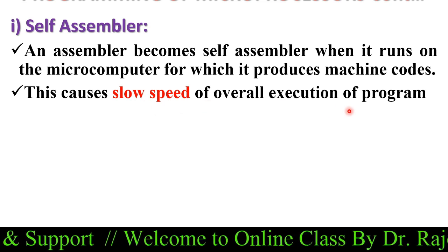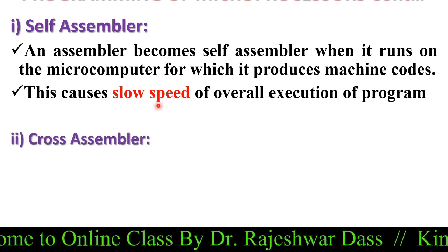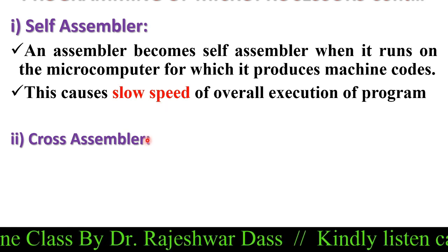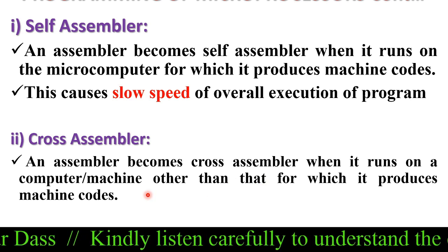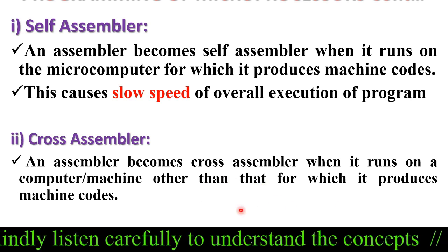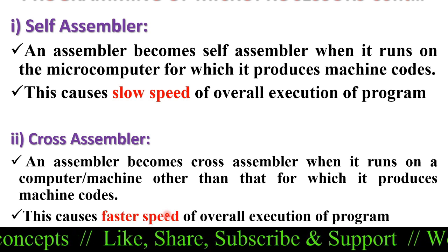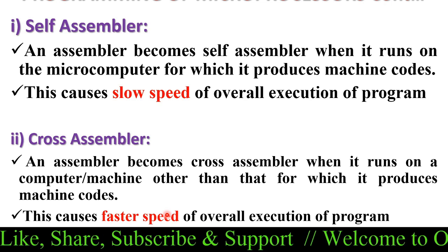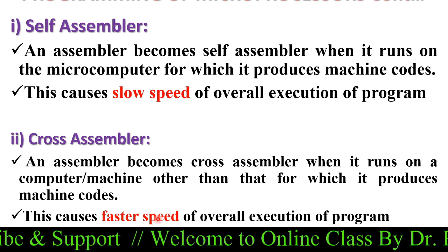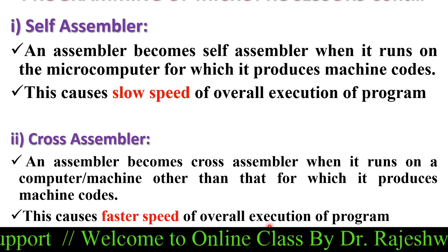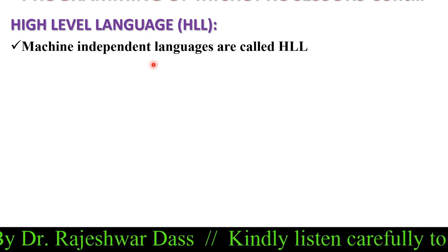That is why cross assemblers are preferred. An assembler becomes a cross assembler when it runs on a computer or machine other than the one for which it produces the machine codes. A separate processor is used to run the assembler, which converts assembly language codes into machine language codes. This causes faster overall execution speed of the program.